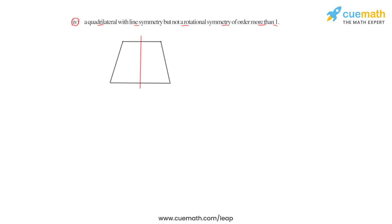The fourth part asks us to draw a quadrilateral with line symmetry but not a rotational symmetry of order more than one. This is only possible in the case of a trapezium, where the line of symmetry divides the trapezium into two equal halves. The trapezium has two equal sides, and if folded about this line the two equal halves will coincide. For this figure, the number of lines of symmetry is one, based on the orientation of the figure.